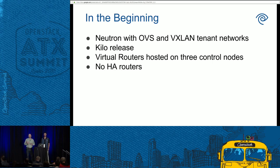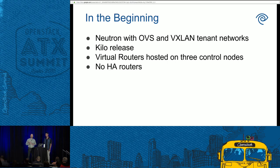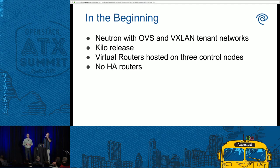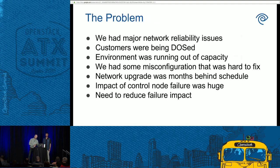Just to give you a little bit of back history — at the beginning of the year, we were running into some problems. We were using Neutron with OpenVSwitch and VXLAN tenant networks. At that time we were using Kilo. We had all of our virtual routers hosted on one of three control nodes. We didn't have HA routers in place, partly because we weren't sure how mature HA routers were in Kilo, and also because we were using the L2 population driver which wasn't supported with HA routers in Kilo.